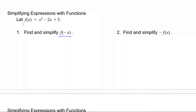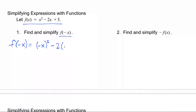We have f of x equal to x squared minus 2x plus 5, and we're going to look at f of negative x. So wherever I see an x in my function, I'm going to replace it with negative x. So x squared becomes parentheses negative x squared. It's always extremely important that when you are evaluating functions, you use parentheses when substituting in your input value. So negative x squared minus 2, and then I replace the next x with negative x, plus 5.